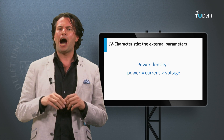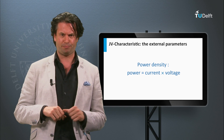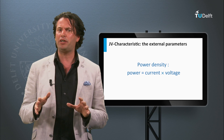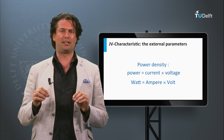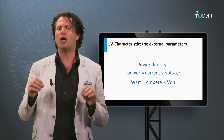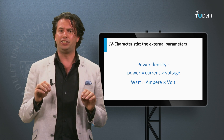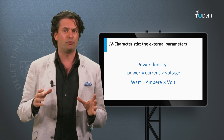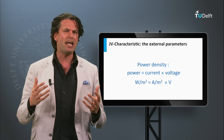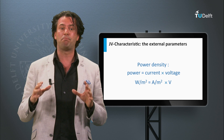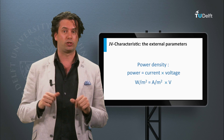Now we want to know how much power a solar cell can deliver, and how power is related to the JV curve. As you might know from your physics class, power is equal to the current times the voltage. The unit for power is watt, equal to ampere times volt. Since we use current density in the JV curves, we will talk about power density — which is power per area. Current density is expressed in amps per square meter or milliamps per square centimeter, which means the power density is expressed in watts per square meter or milliwatts per square centimeter.